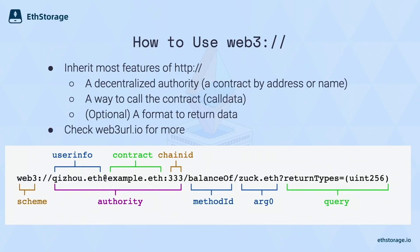How do you use Web3 URL? It inherits most features of HTTP, which is already widely adopted across the internet. It has a decentralized authority — a contract or a name service — and right now we have full integration with ENS. There's also a defined way to call a smart contract to get core data, and a format for how data is presented in a browser: JSON files or native web objects — pictures, scripts, JavaScript — anything can be displayed using Web3 URL.